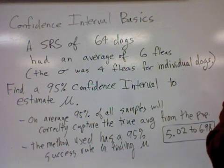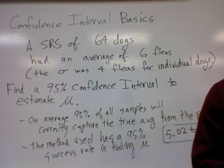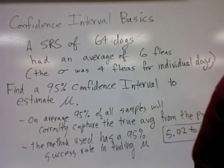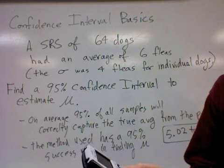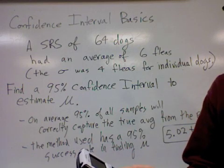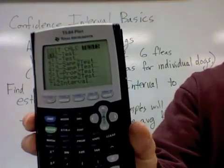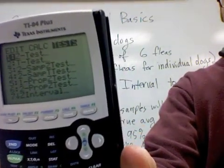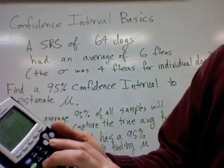There is also a way to use the graphing calculator to get these answers too. And very briefly, that can be accomplished by using the stat button on your calculator and going to tests. So stat tests will be a menu that you can visit to actually do a z interval.